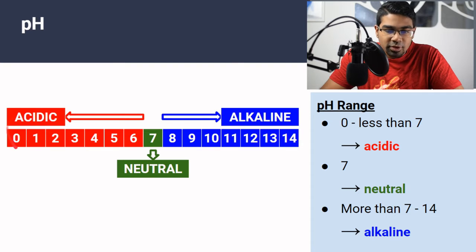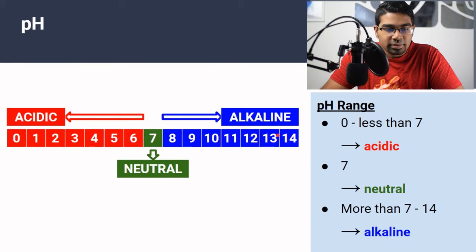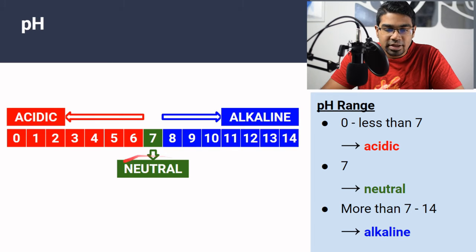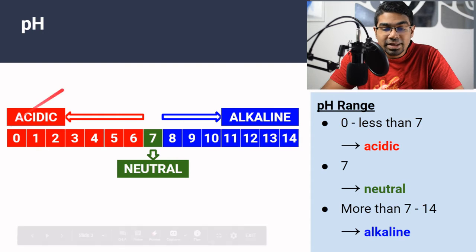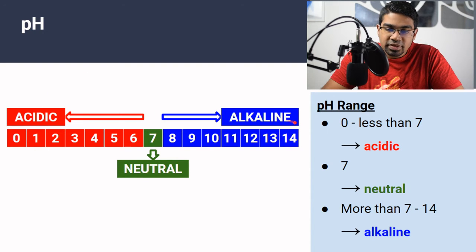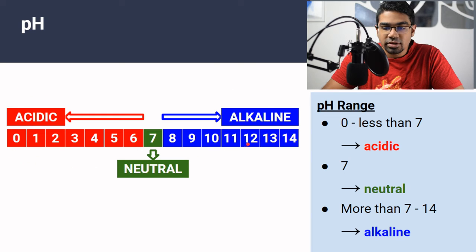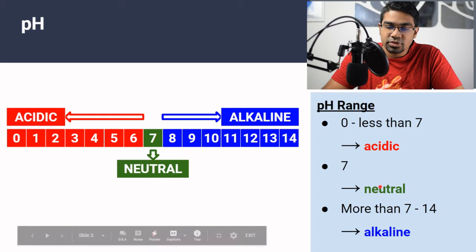You've likely come across this before — this is the pH scale. It is from 0 to 14. When a substance has pH 7, it is said to be neutral. If it has a pH of less than 7, then it is said to be acidic. And if it has a pH of more than 7, then it is said to be alkaline. So from 0 to less than 7 is acidic, 7 is neutral, and more than 7 to 14 is alkaline.